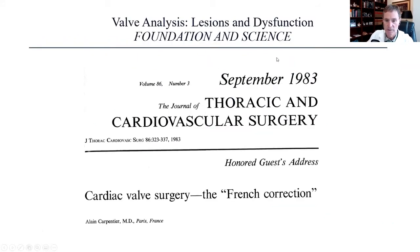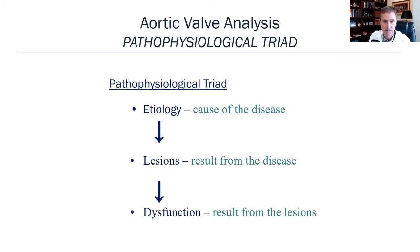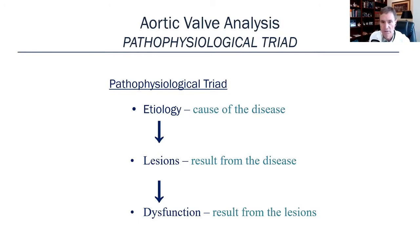Aortic and mitral valve repair really started with Alain Carpentier from Paris when he gave an honored presidential guest address at the AATS meeting back in 1983. He called it the French correction. What he really focused on was the pathophysiologic triad of valvular disease: the etiology, which is what causes the disease; the lesions, that's what results from the disease; and the dysfunction, which is what results from the lesions.